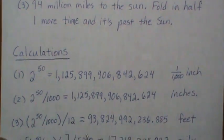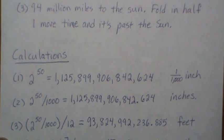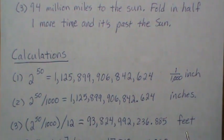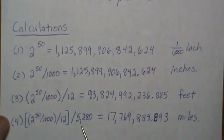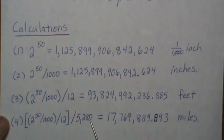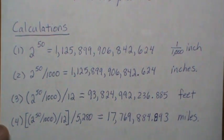It is still a large number—93 billion feet. Now let's convert this to miles. Let's divide this previous number by 5,280 because that's the number of feet in a mile. Then we get 17,769,884 miles, so over 17 million miles high.